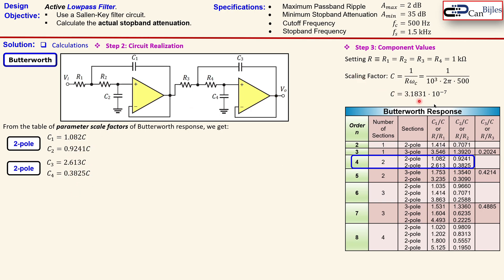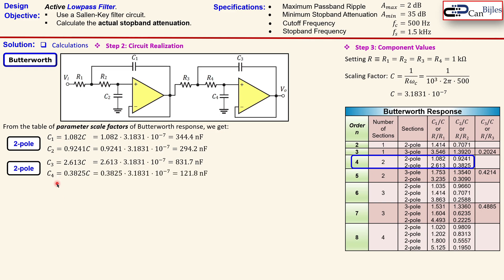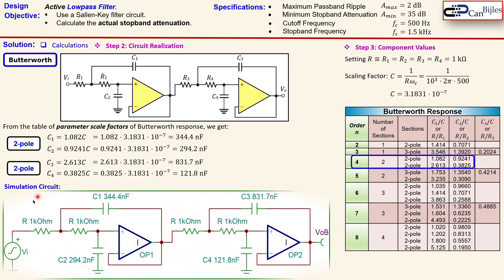Multiplying the scaling factor by each coefficient gives the actual capacitor values C1 through C4, which are then calculated one by one. The resistors are selected, the scaling factor is computed, the Butterworth fourth-order table is used, and the design is complete. In the LTspice simulation circuit you can see all resistors at 1 kΩ and capacitors C1 through C4 with the exact values calculated here.